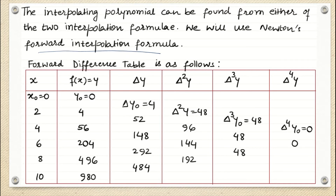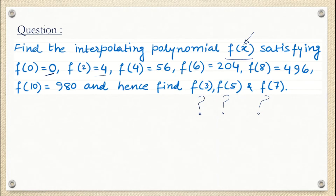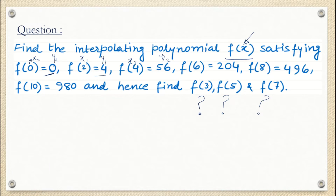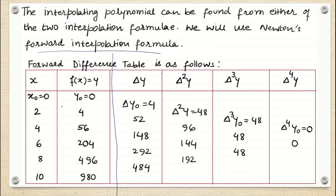The steps will now be similar to what we have done before. We write down Newton's forward difference table. The x values are: x_0 = 0, x_1 = 2, and so on; y_0 = 0, y_1 = 4, y_2 = 56, etc. We have just rewritten the given data. Since we are following the forward difference table, we use the upward triangle to find differences: 4 − 0, 56 − 4, and so on.